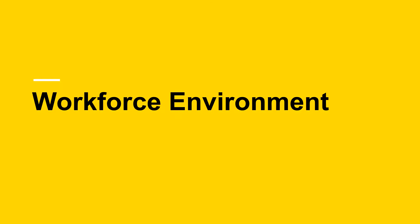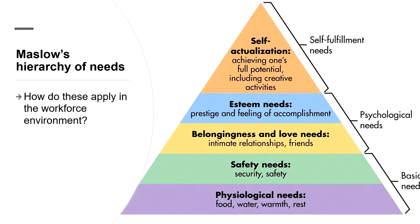The second topic in this module is about the workforce environment. This is about thinking about processes and systems rather than individuals — considering the broad context in which the work takes place. One way to think about the workforce environment is to consider the needs of the workforce. Maslow's hierarchy of needs can be helpful here: how does your workforce environment support safety, the need to belong, feelings of accomplishment, and access to comfort? Just like we don't expect students to learn when they're hungry, why would we expect high performance from a workforce that doesn't feel safe or doesn't feel they belong?